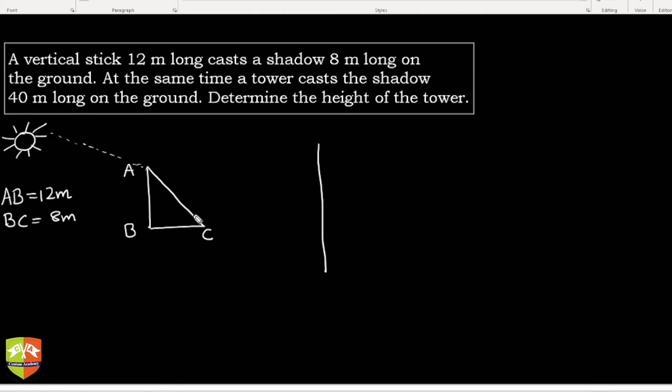will be in that direction, so this is the source of light. This is how light is falling on the ground. The sun's position would be somewhere on top. Similarly, there is a tower and the tower's shadow is this. Let